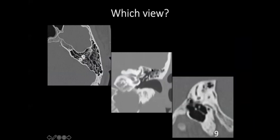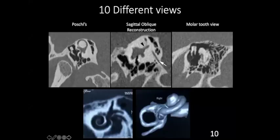You have to master the axial view, the coronal view, and the sagittal view. One particular view cannot describe anatomy of all structures and all pathologies because the temporal bone is one part in the body which has maximum anatomical variations. As an otologist or ENT surgeon, you can be proud that when you're handling ear diseases, you're handling one region with maximum anatomical variations in the body.